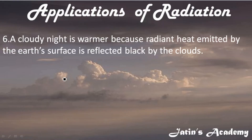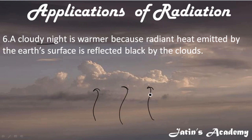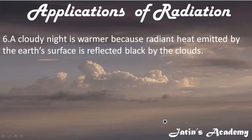The next application: a cloudy night is much warmer compared to a clear night. On a cloudy night, clouds are present in the atmosphere. Whatever heat is on the earth's surface tries to go upward, but the clouds — being light colored and good reflectors — reflect the heat back to the earth's surface. This does not allow heat to escape into space, and so the earth's surface remains more and more warm on a cloudy night.